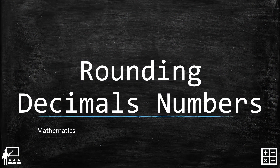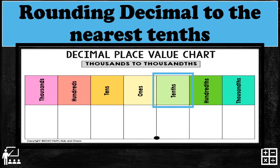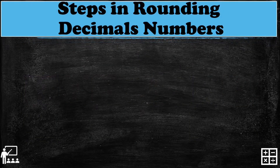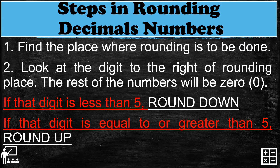This video lesson is about rounding decimal numbers. In this topic we're going to focus on rounding decimals to the nearest tenth. Here are the steps in rounding decimal numbers: first, find the place where rounding is to be done — and our place value we're going to focus on is just the tenth place.